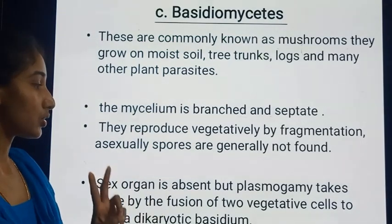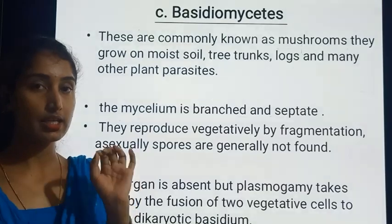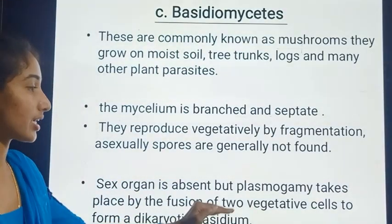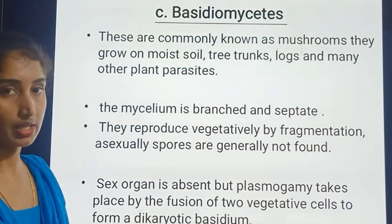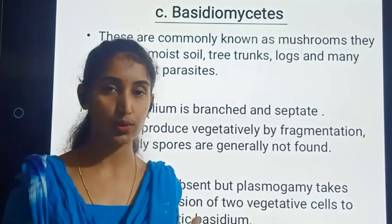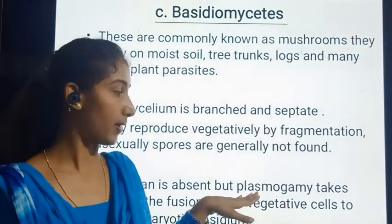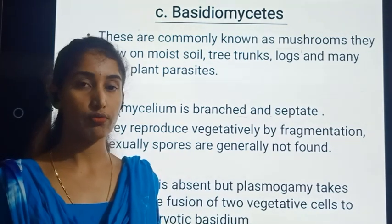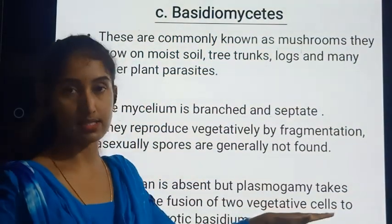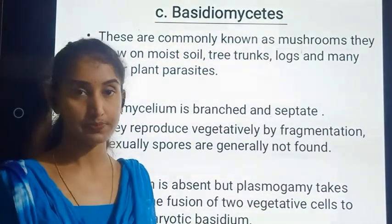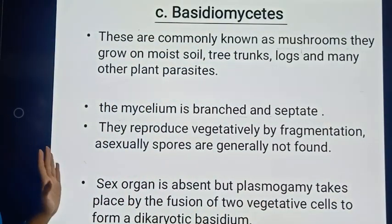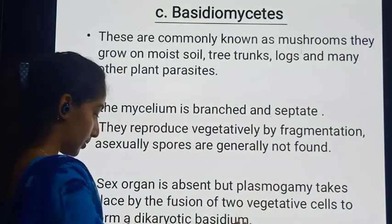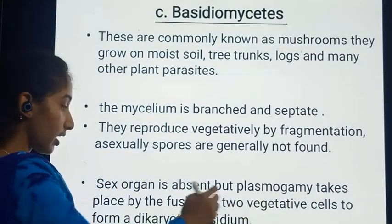The two vegetative cells are fused in the mycelium, resulting in the formation of a dikaryotic basidium. Plasmogamy means the fusion of the plasma of two vegetative cells as well as the fusion of their nuclei. When this fusion of two vegetative cells takes place, we ultimately obtain a dikaryotic basidium.